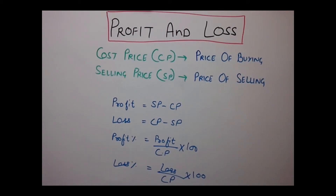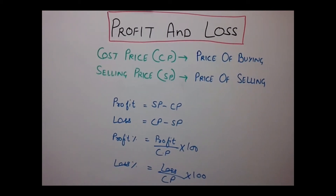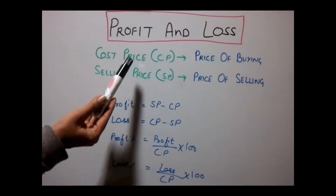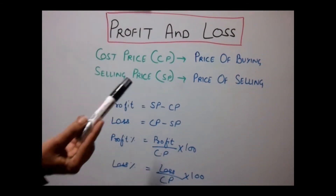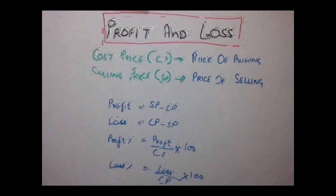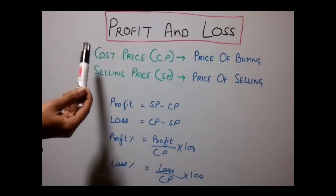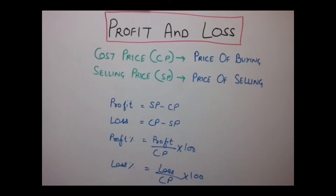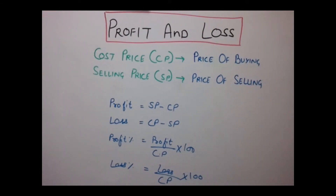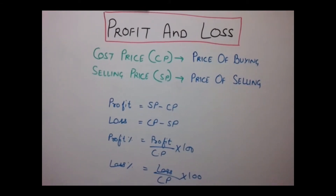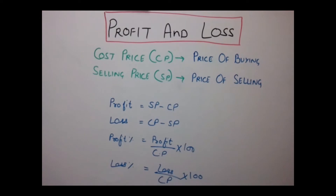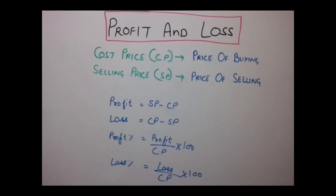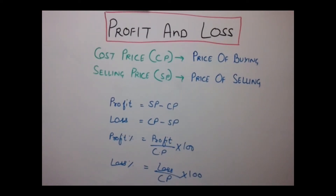Some terms you need to be aware of in Profit and Loss are Cost Price, Selling Price, Profit and Loss. Cost Price is the price at which a person buys something, and Selling Price is the price at which a person sells something.